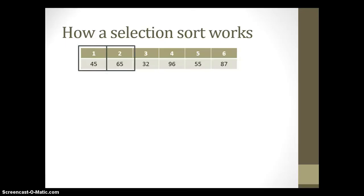Let's look at position one and position two. 45 is not bigger than 65, so we don't do anything. Now comparing position one and three — 45 is bigger than 32, so they are in the wrong order. We're going to swap them: the value in position one goes to position three and the value in position three goes into position one.